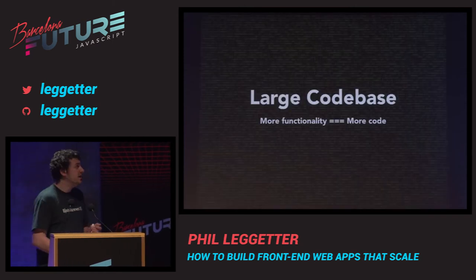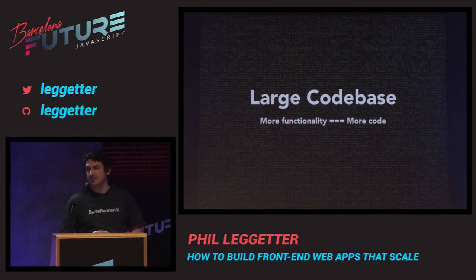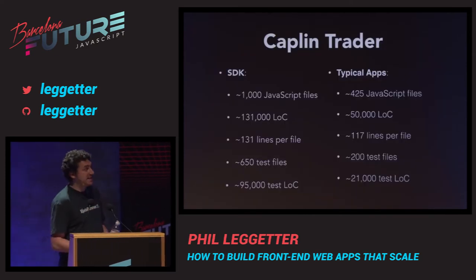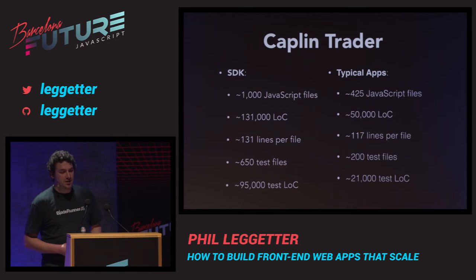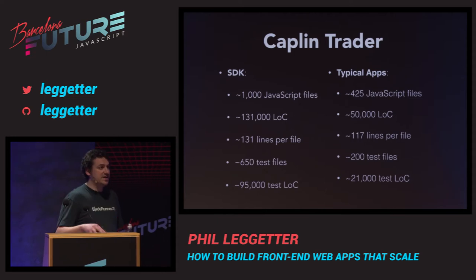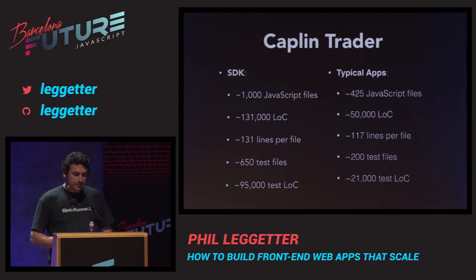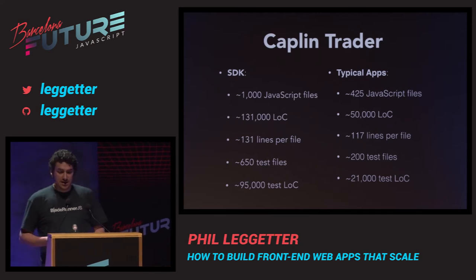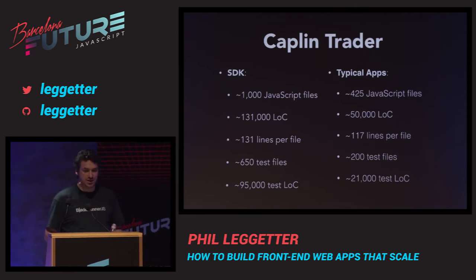There's a large code base — no matter how good a developer you are, the more functionality you add, the more code you're going to have. In Kaplan Trader, we have an SDK which we build our applications on top of: 1,000 JavaScript files, 131,000 lines of code, 95,000 lines of test code. Then we build applications on top of that, and our customers build applications too — around 50,000 lines of code. In addition, there are other asset types: templates, HTML templates, CSS, images, config, and so on. This application has around a quarter of a million assets.